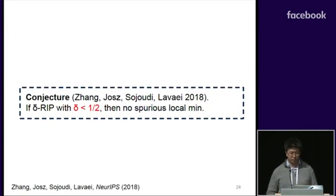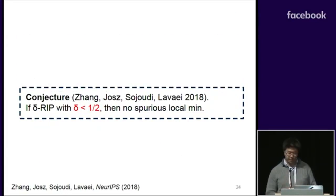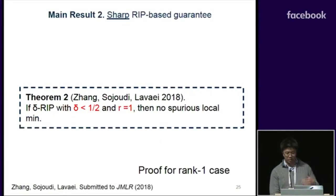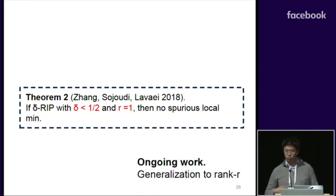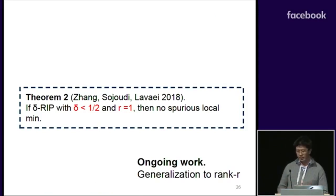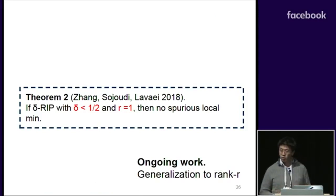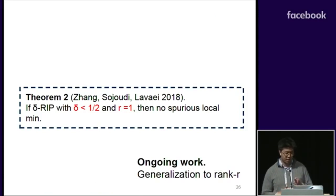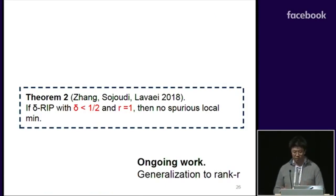What about less than one-half? We conjecture in the conference paper that in this case there's no spurious local minimum. In the journal version, we prove it for the rank-one case. With a bit of work, we believe the proof technique can be extended to the general rank case, so we believe the statement is generally true.